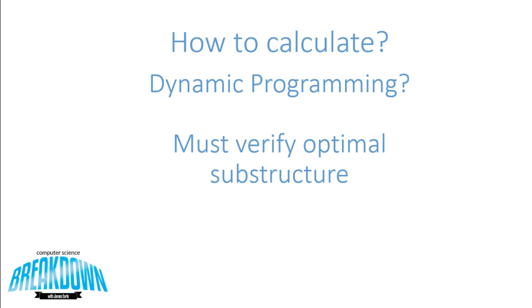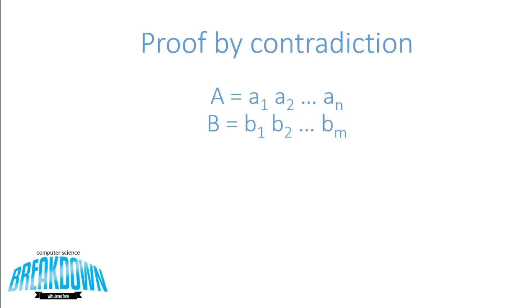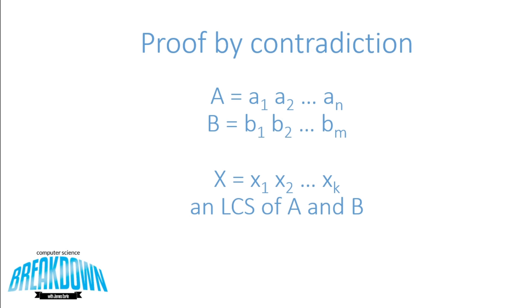We're going to try to do this through a proof by contradiction. We consider two strings A and B, where A is of length N and B is of length M. Now let's also consider another string X, and let X be the LCS of A and B. Given this, we can break down the proof into three different cases.